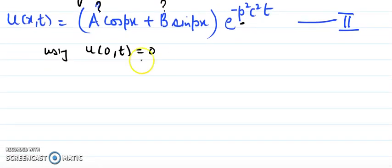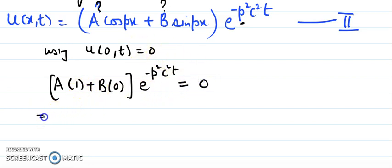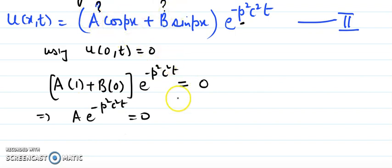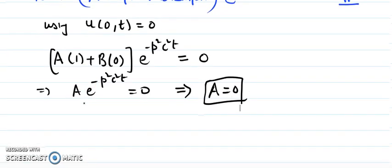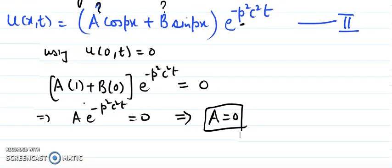Plugging x=0 into the general solution: A times cos(0) is 1, and B times sin(0) is 0, so we get A · e^(−p²c²t) = 0. Now, we need a non-trivial solution, so this exponential term cannot be zero. Therefore the constant A must equal zero. When A equals zero, the solution reduces accordingly.